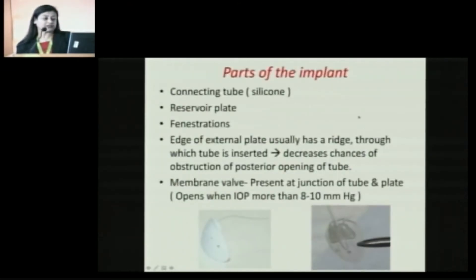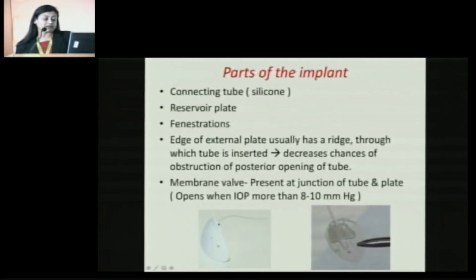What are the parts of these implants? Basically, whether it is a non-valved or a valved implant, there is a connecting tube which is made up of silicon. There is a reservoir plate. There are fenestrations and anchoring holes. The fenestrations are mainly to anchor with the fibrous tissue. At the edge of the external plate where the tube inserts, there is a ridge which decreases the chance of occlusion of the tube at that part. And in the valves, in this area, there is a membrane valve made up of silicon elastomers, which opens when the IOP rises more than 8 to 10 millimeters of mercury.